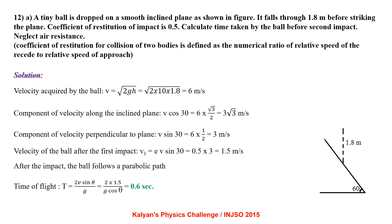A tiny ball is dropped on a smooth inclined plane and falls through 1.8 m before striking. Coefficient of restitution is 0.5. Velocity before striking: V equals root 2gh equals 6 m per second. Component along the plane is V cos 30 equals 3 root 3 m per second; component perpendicular to the plane is V sin 30 equals 3 m per second. Velocity after first impact: V1 equals e times V sin 30 equals 1.5 m per second. The ball follows a parabolic path, giving time of flight T equals 2V sin theta by g, which is 0.6 seconds.